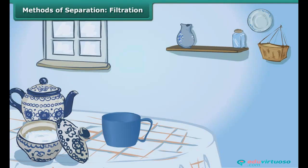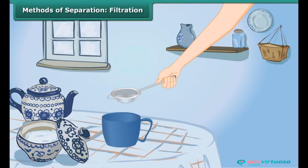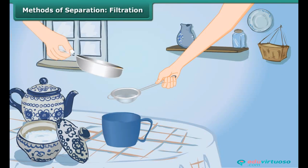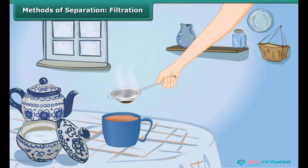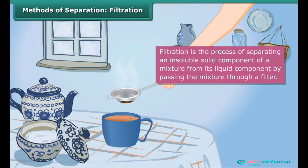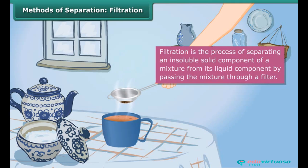After preparing tea, this tea stall owner pours the mixture into the tea strainer. The tea passes through the holes of the tea strainer, leaving behind the tea leaves in it. This process of separation is known as filtration.